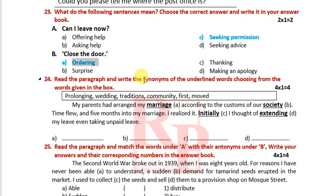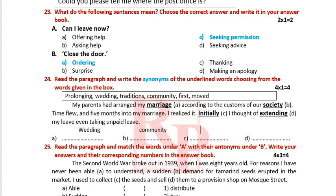Now it's time for synonyms. 'Marriage' — my parents had arranged my marriage — synonym: wedding. 'Society' — according to the customs of our society — synonym: community. 'Initially' — synonym: first. 'Extending' — synonym: prolonging.